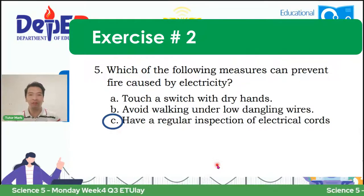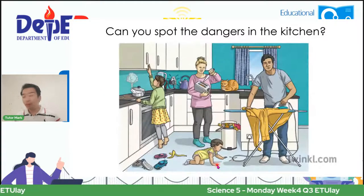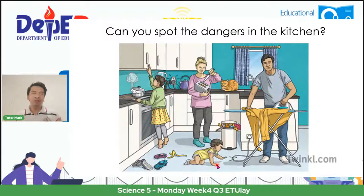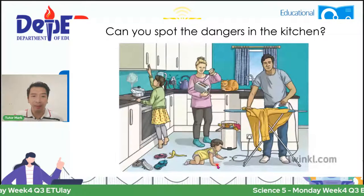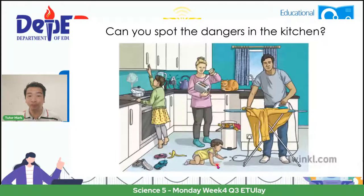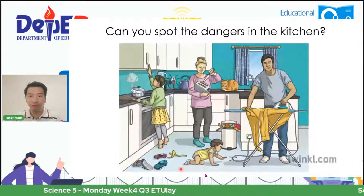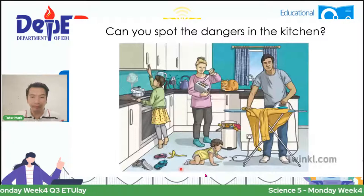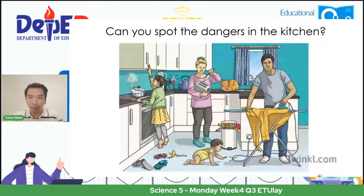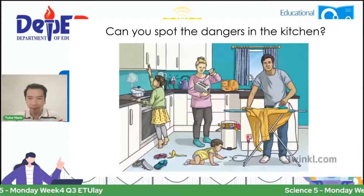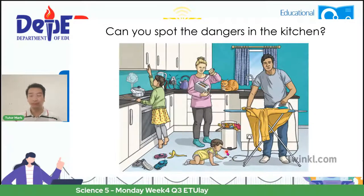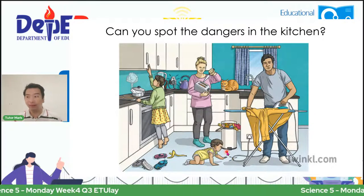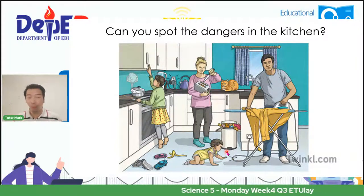Moving on to the third part of our session — let's spot the dangers in the kitchen. Usually when we are at home, confident tayo na safe tayo, pero importante na tignan natin ang ating mga equipment. Tignan natin yung kilos ng mga taong ito. Can you spot the dangers in this kitchen? Look at the baby — gumagapang. Tapos, nagpa-plant siya yung kanyang daddy. Napansin ninyo yung wire? Parang may bali. Therefore, if you spot this one as the first danger, then you are correct because we need to make sure that the electrical wires are actually in good condition. Walang sira.